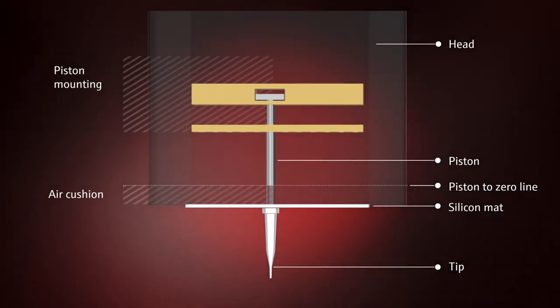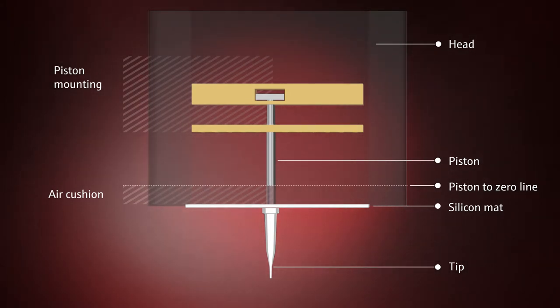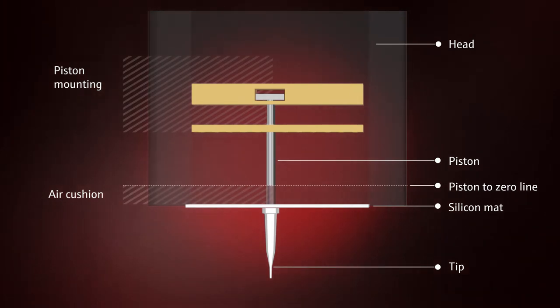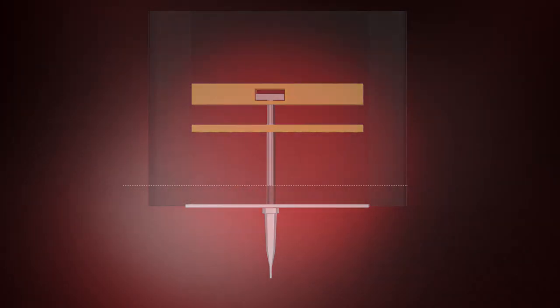A cushion of air is always located between the piston and the liquid sample in the tip. The silicone mat ensures an airtight seal between the tips and the head.